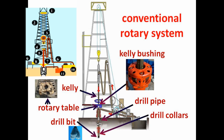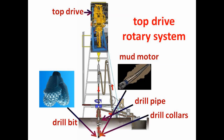Let's start with the rotary system. Within this system, you have the drill bits, the drill collars, the drill pipe, the kelly, the kelly bushing, and the rotary table. On more modern rigs, the kelly and its parts have been replaced by the top drive, also known as the power swivel, and the downhole mud motor for directional drilling.